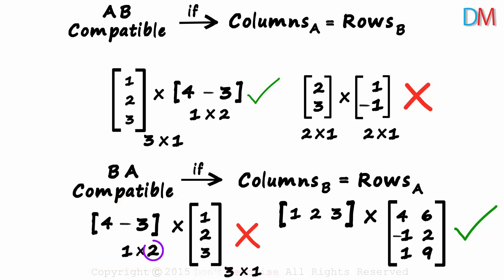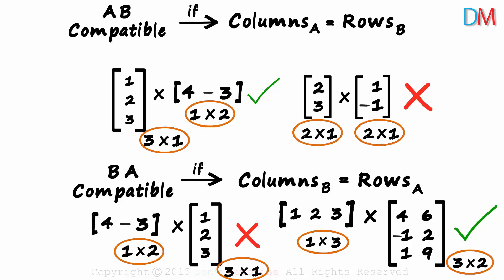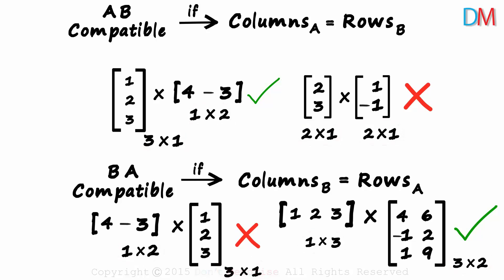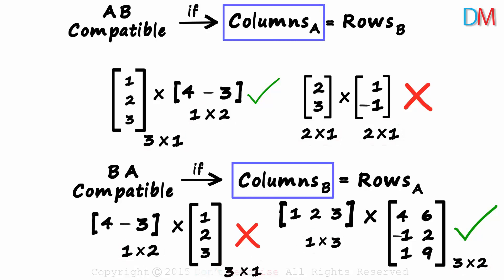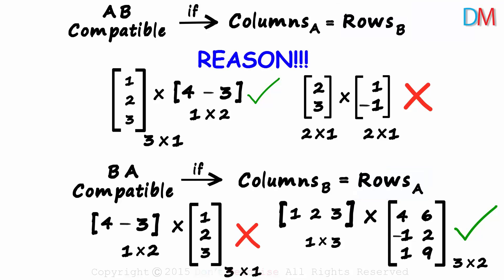In the third example, 2 is not equal to 3, hence multiplication not possible. And in the fourth, 3 is equal to 3, hence multiplication is possible. Some of you might be thinking that writing the orders is a waste of time, and that just finding the number of columns of the first matrix and rows of the second is enough. But there is a very important reason why writing the orders helps us, which we will cover in the next session.